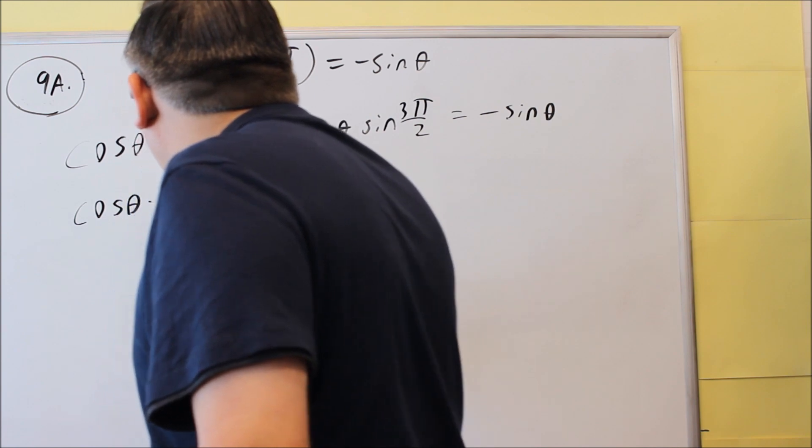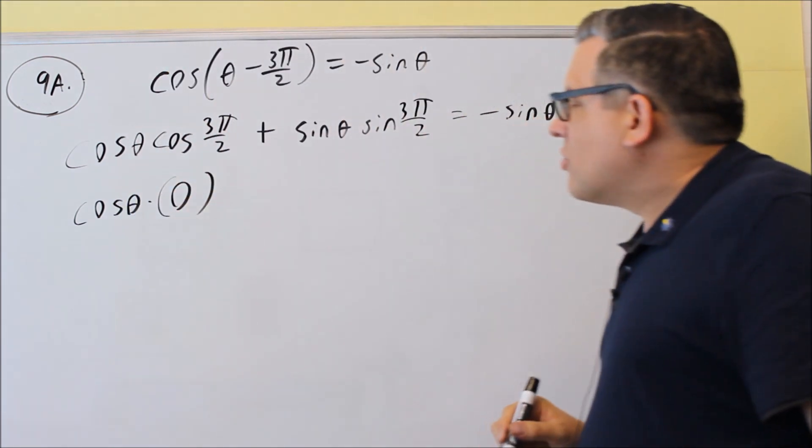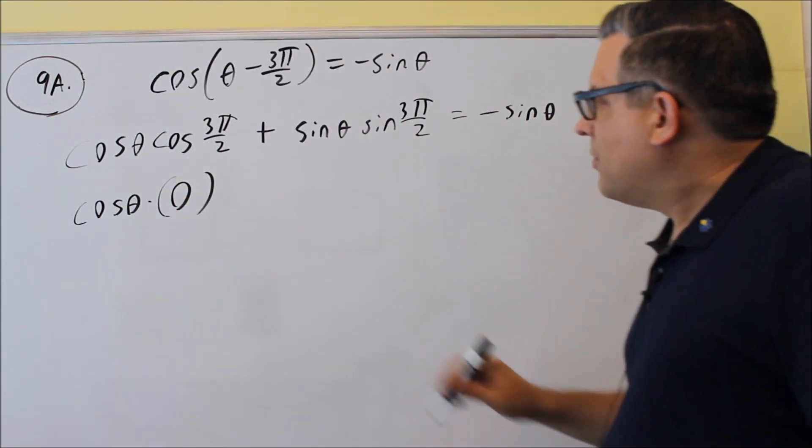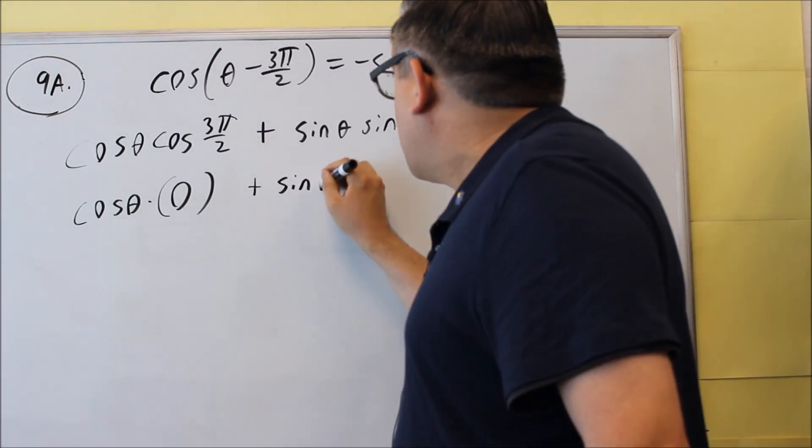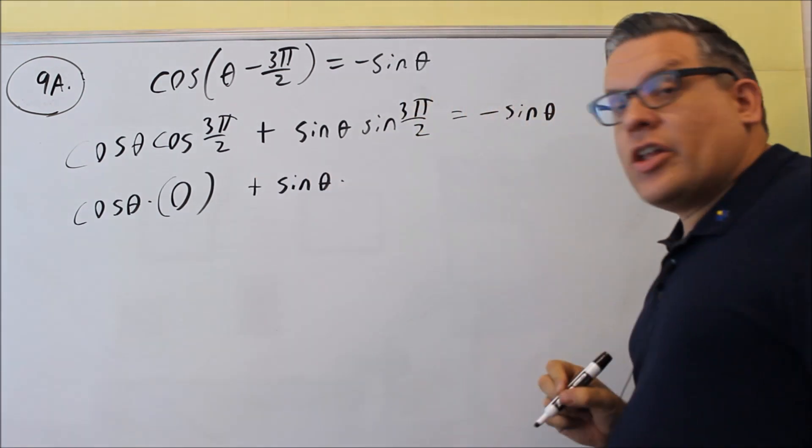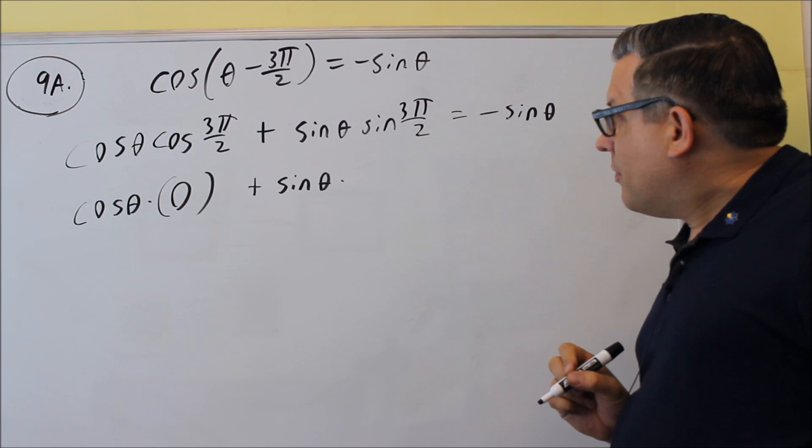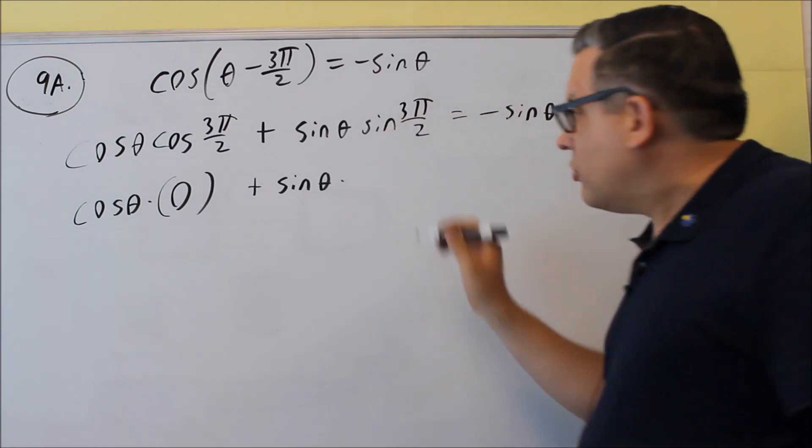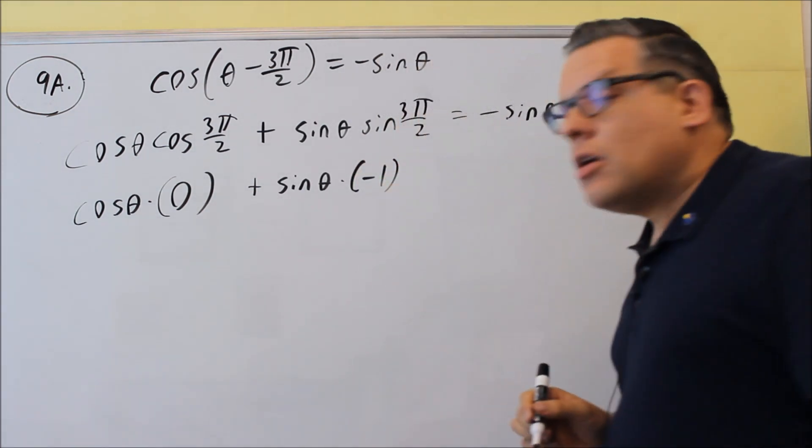So cosine θ, and then I'm going to put a zero, times zero for that part, and then I have a sine θ, and I'm going to put a value in for sine 3π over 2, that's the y value at 3π over 2, which is going to be negative 1.